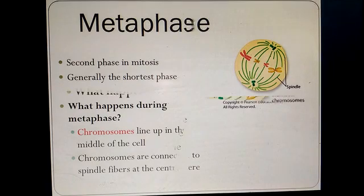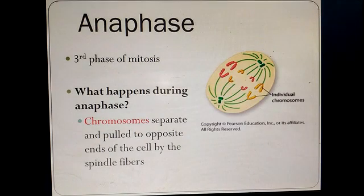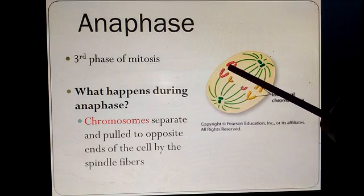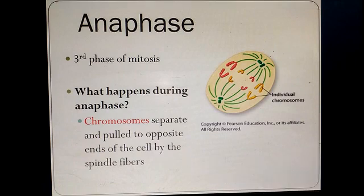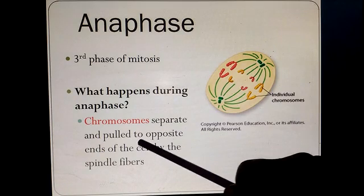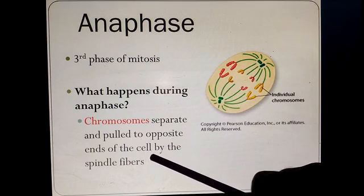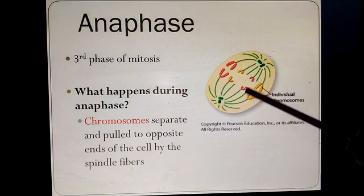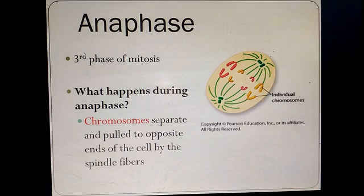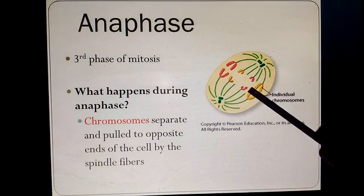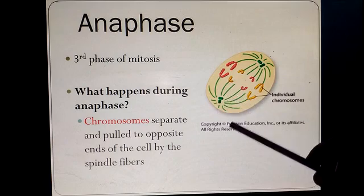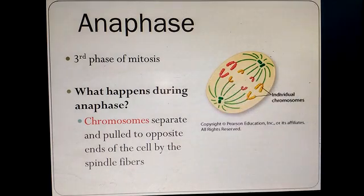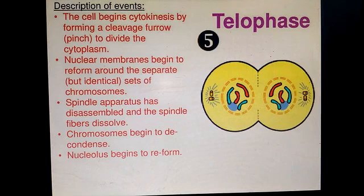The next stage is anaphase. During anaphase, chromosomes separate and are pulled to opposite ends of the cell by the spindle fibers. The spindle fibers pull the chromosomes toward the opposite poles.